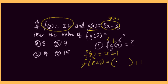So f of g of x is equal to — now I replace x with 2x minus 3 on the left-hand side of the equation. So we're basically replacing x on both sides, but it's the right-hand side I'm more interested in. Let's simplify. If we want to remove the bracket, we put a 1 in front. So 1 times 2x is 2x, and 1 times negative 3 is negative 3. We then add plus 1, which gives 2x, and negative 3 plus 1 is negative 2.